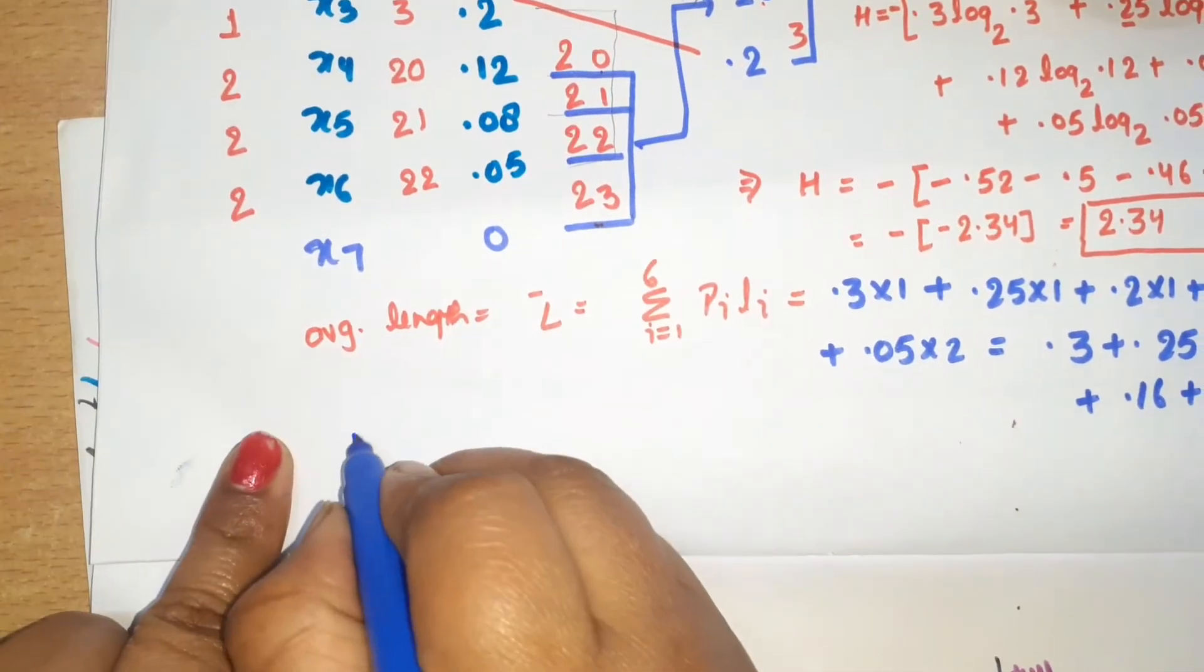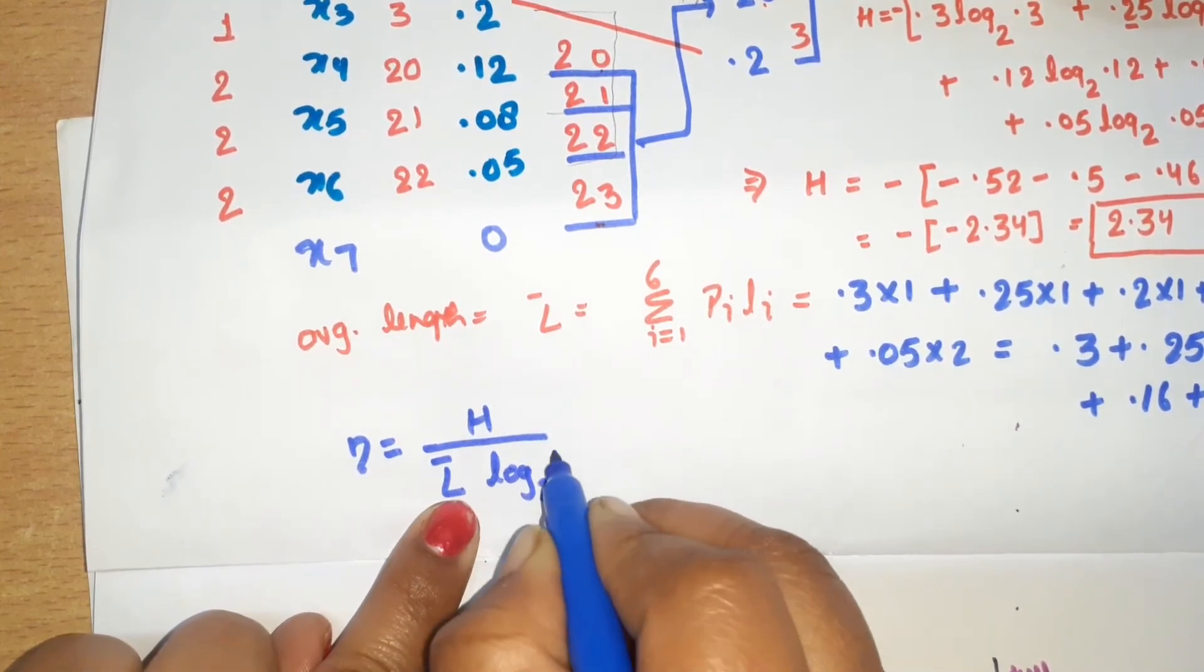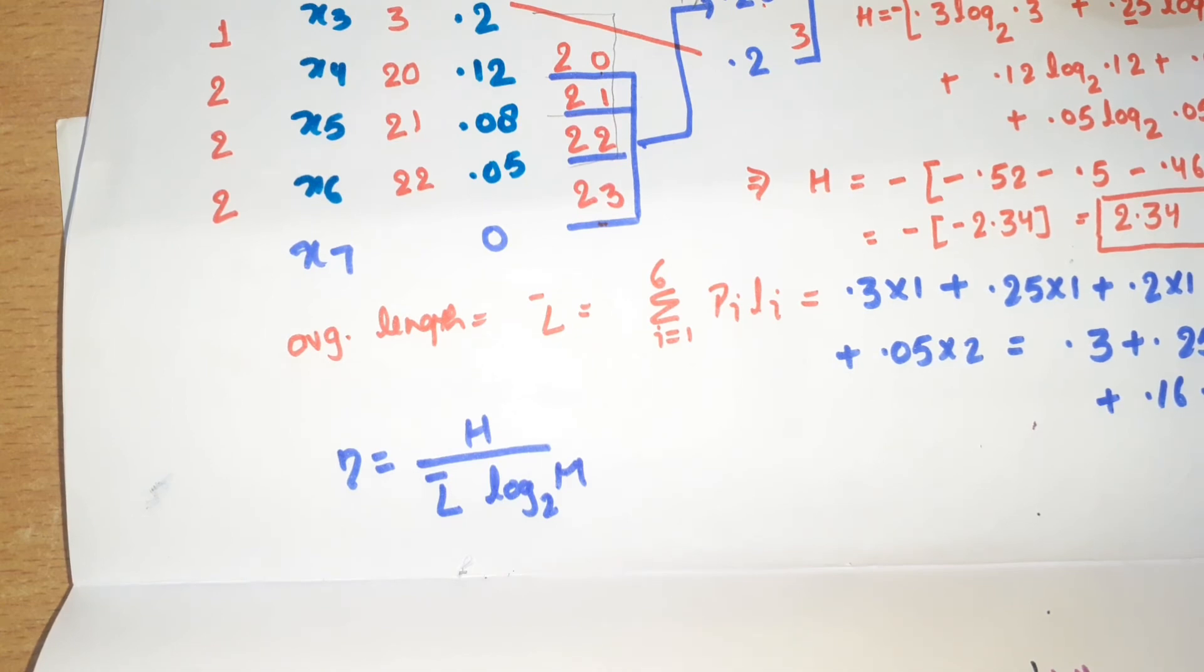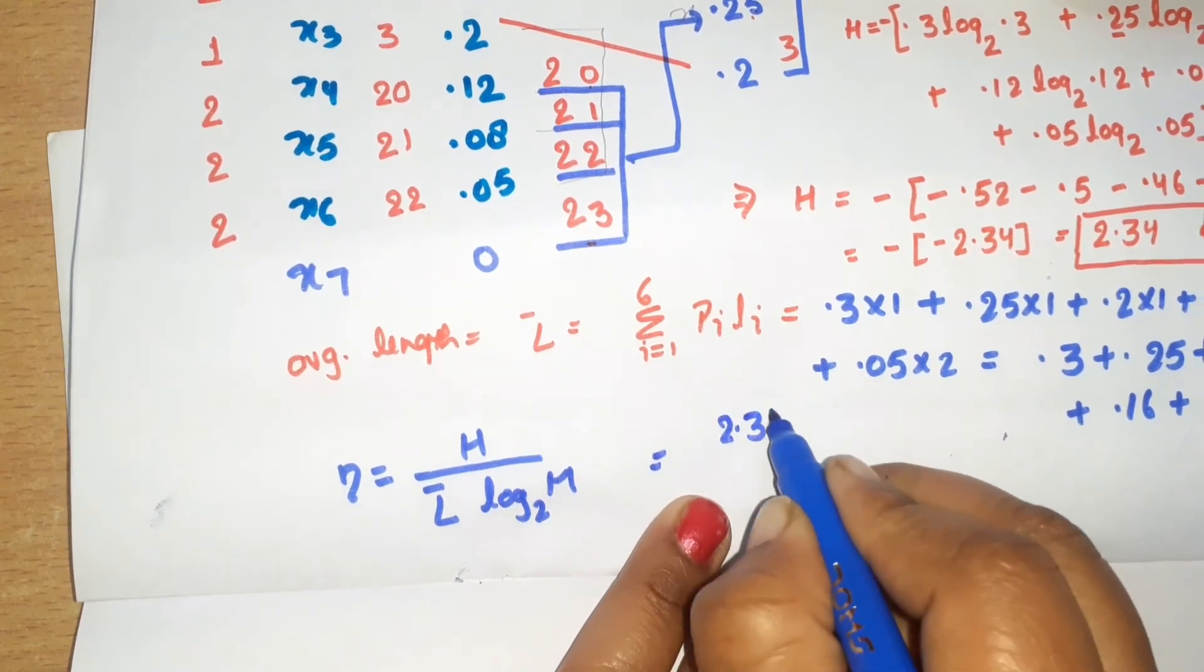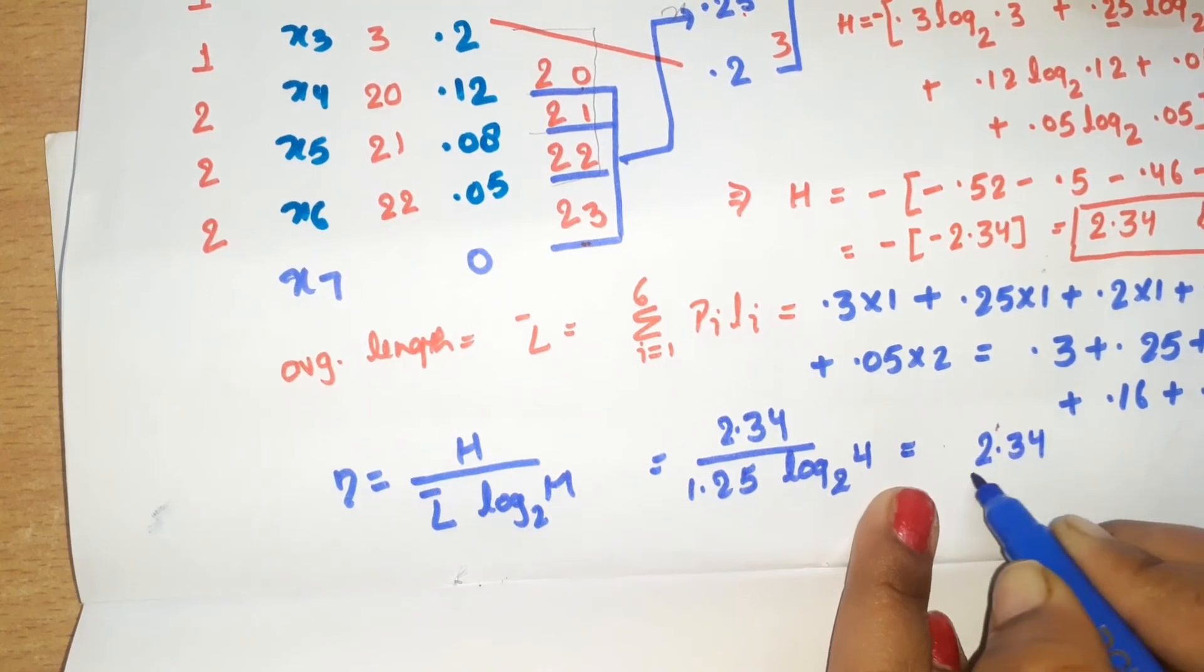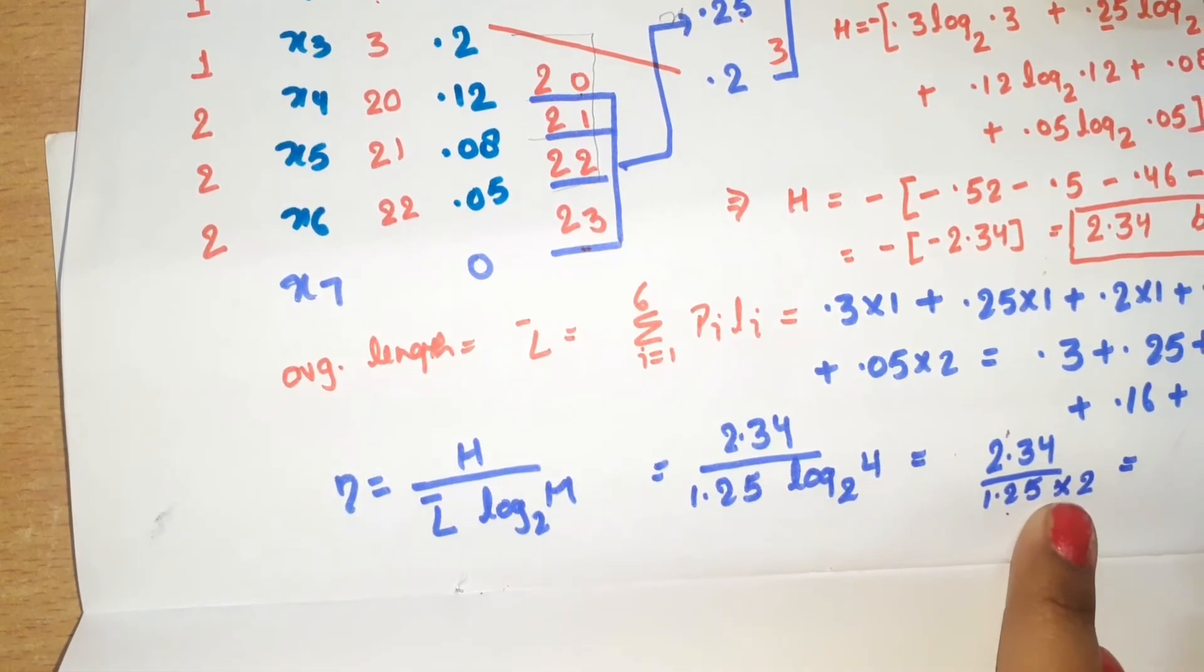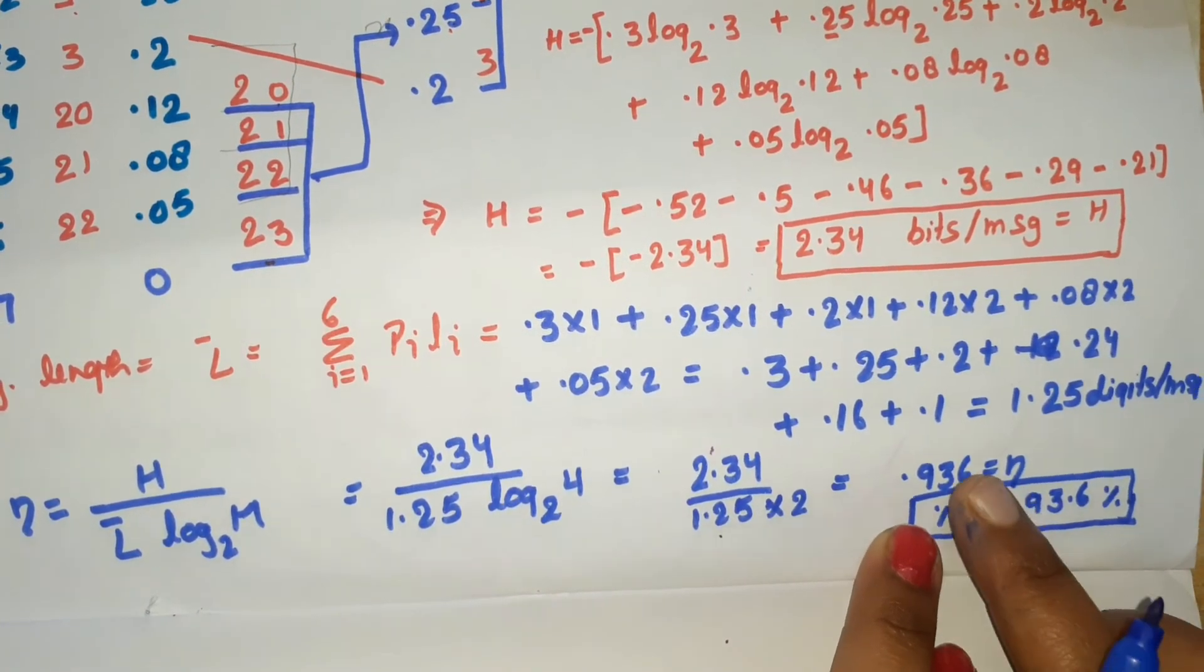Efficiency is equal to H divided by (average length × log₂ m). The value of m is what you're calculating - quaternary means m = 4. Efficiency = 2.34/(1.25 × log₂ 4) = 2.34/(1.25 × 2) = 2.34/2.5. For percent efficiency, we multiply by 100 and get 93.6%.